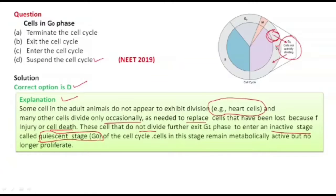The correct option is option D — suspend the cell cycle. In G0 phase, the cells are metabolically active but longer proliferation doesn't need to divide.